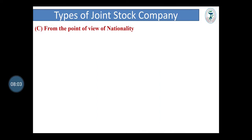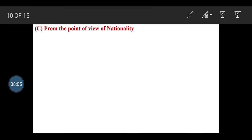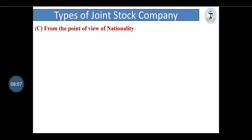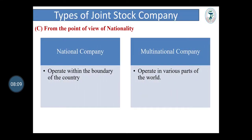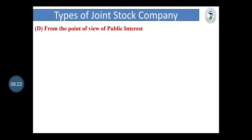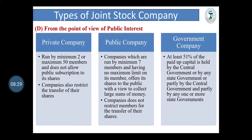Third, from the point of view of nationality: national companies and multinational companies. National companies operate within the boundary of the country, and multinational companies operate in various parts of the world. Last, from the point of view of public interest — and this is the most important classification: private company, public company and government company.